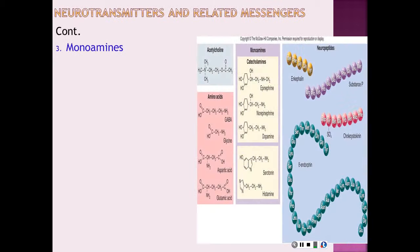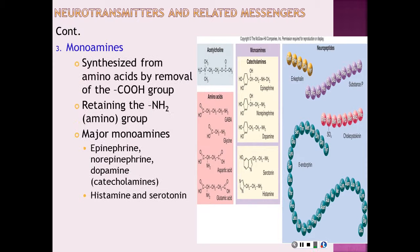The third category is monoamines, which are synthesized from amino acids by removal of the carboxyl group. The major monoamines are epinephrine, norepinephrine, dopamine, histamine, and serotonin. The first three — epinephrine, norepinephrine, and dopamine — are in a subclass called catecholamines.